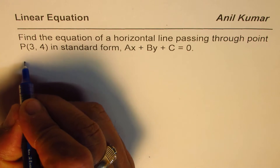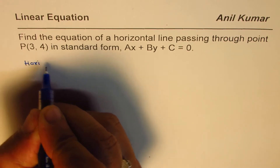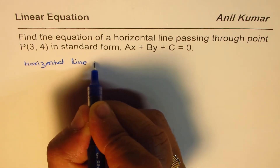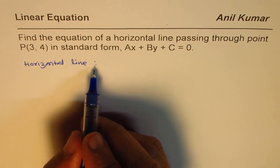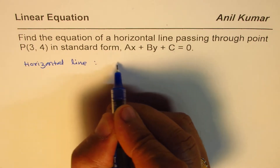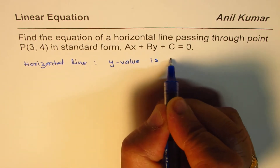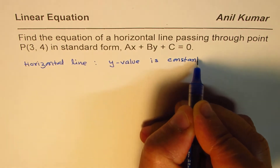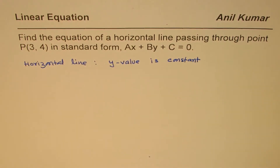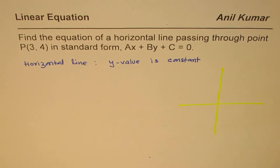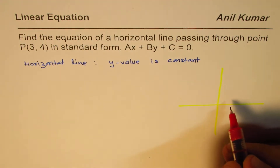What are we given here? We are given a horizontal line. A horizontal line is one in which the coordinate value of y is constant. So the y value is constant — that is a horizontal line. Basically, if I try to sketch a line in the given situation, it is a line passing through the point P(3,4).